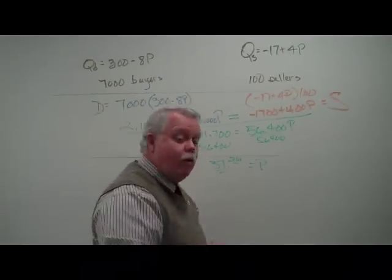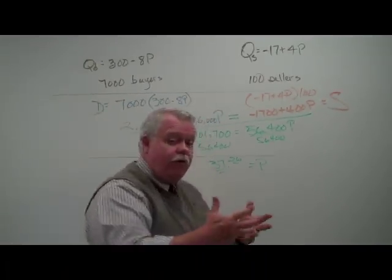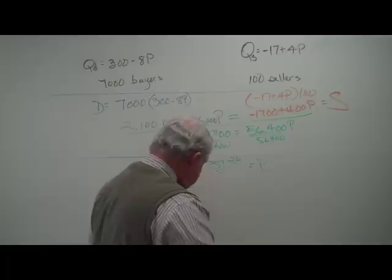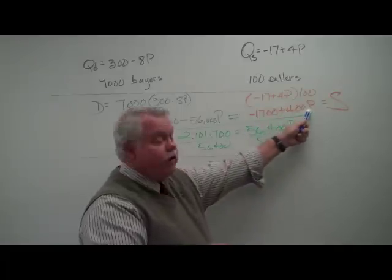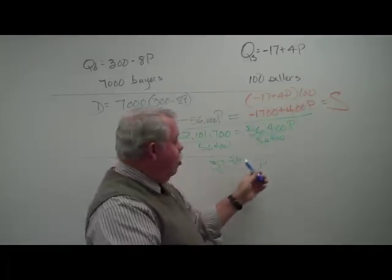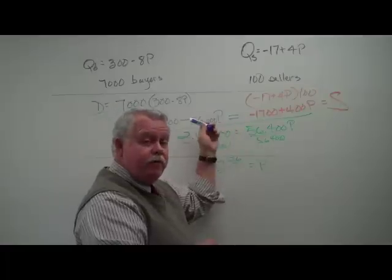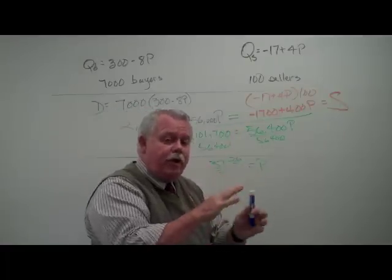Once we know what the equilibrium price is, we can solve for the equilibrium quantity. We can do that by taking this price and substituting back in on the supply function or on the demand function. We should get the same number.